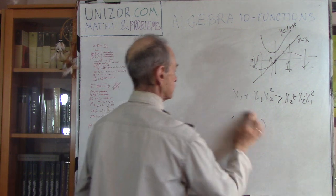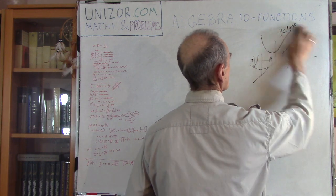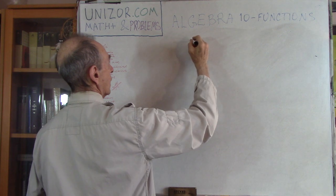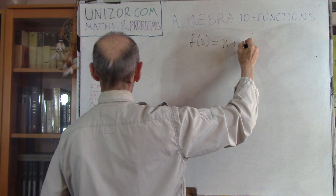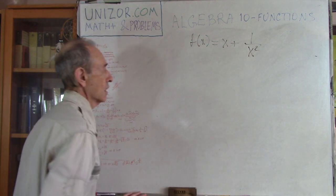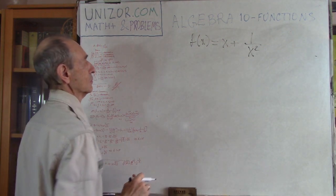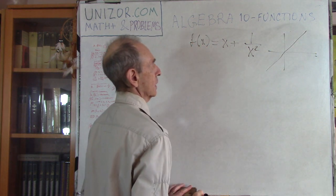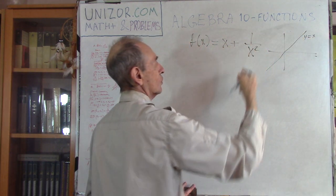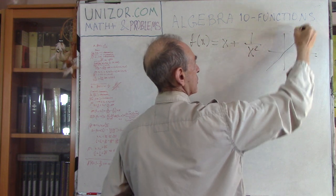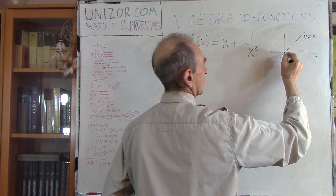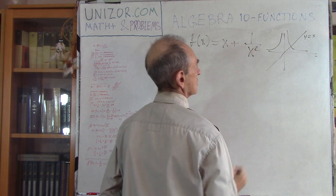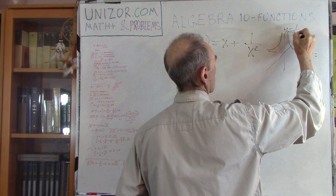Another problem is kind of similar. The function is f(x) = x + 1/x². Let's start with the graph — it might be a bit more difficult. We have to add two functions: one is y = x, and the other is 1/x². Now x² is a parabola; one over it means whenever x² goes to infinity, 1/x² goes to zero, and whenever x² goes to zero, 1/x² goes to infinity.